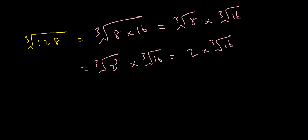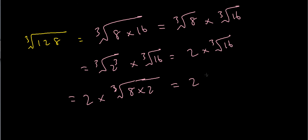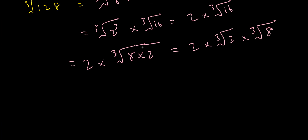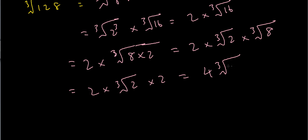Notice that I can split 16 further. I know that 16 is 2 times 8, so this becomes 2 times the cube root of 2 times 8. The cube root of 8 is again just 2. So this gives us 2 times the cube root of 2 times 2. Since 2 times 2 is 4, collecting those together, the final answer is 4 times the cube root of 2.